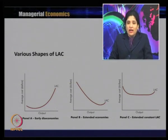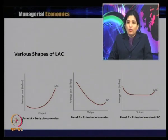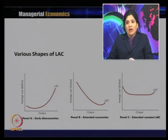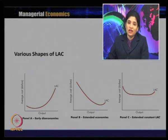Looking at the second graph — extended economies — the decreasing portion of cost of production is longer than the normal or regular level. This is evidence of extended economies, meaning the firm enjoys reduced cost of production to a larger extent. Economies of scale means reduced cost of production as the scale of output increases, and here the firm enjoys those economies to a larger extent.